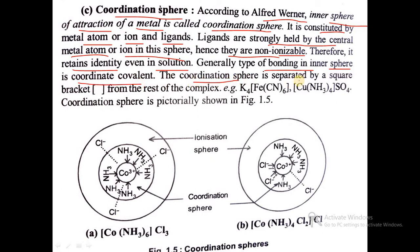The coordination sphere is separated by a square bracket from the rest of the complex. Examples include potassium ferrocyanide K4[Fe(CN)6] and copper tetramine. The coordination sphere is pictorially shown in the figure below.